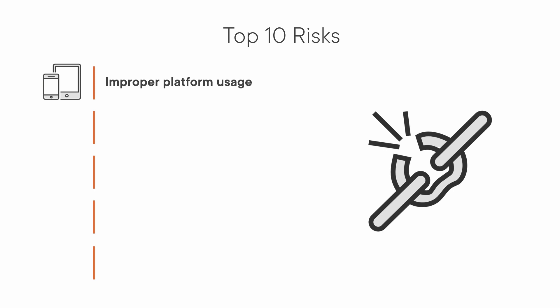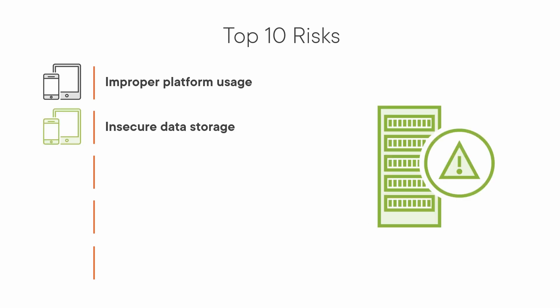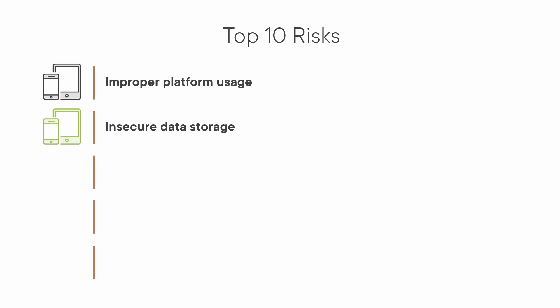M2 is Insecure Data Storage. There's a trade-off with supporting offline functionality, and developers must carefully consider which data will be stored on mobile devices and how it will be stored. A mobile application should avoid storing sensitive information on the local file system if possible, as it could lead to an attacker gaining access after some physical acquisition of the device.